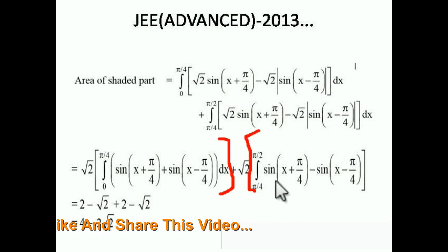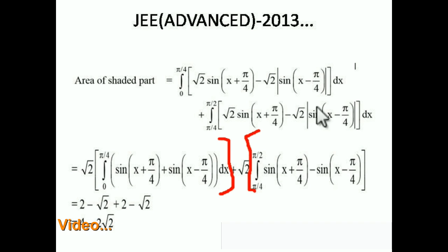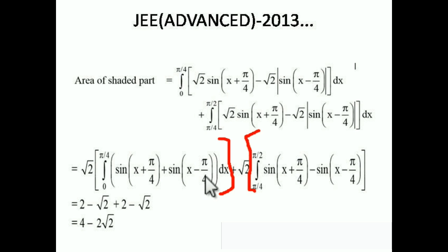The integration is straightforward — the integral of sin is −cos. So we get −cos(x + π/4) evaluated with the corresponding limits for each part, along with −cos(x − π/4). Then apply upper limit minus lower limit for each integral. After evaluating both parts you get the final answer: 4 − 2√2.